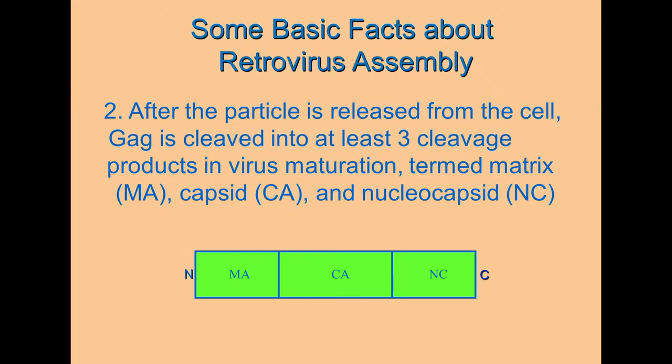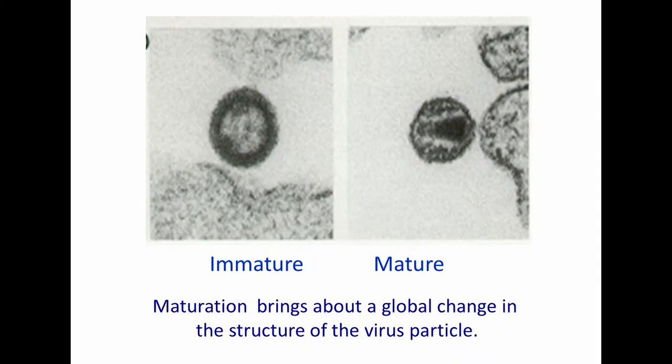This is what's called virus maturation. The three products always include, from N to C terminus: matrix, capsid, and nucleocapsid. This maturation event is really a global reorganization of the structure of the particle and is, of course, absolutely required for infectivity.